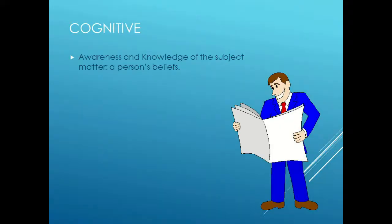The cognitive domain relates to how we process information about things — our awareness and knowledge. The focus is on awareness and knowledge: what is it that people believe about things, how aware are you, what do you believe, and what are your thoughts with regards to it?